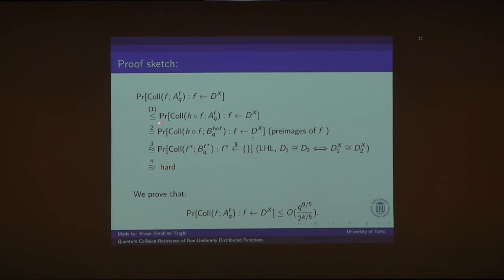So the next step, the second equality, we have a lemma that proves that when we have a quantum adversary A that makes q queries to the function f, then we can construct a quantum adversary B that makes q queries to h composed with f and outputs a collision with the same probability. So here adversary B has to simulate A. So B runs A and answers its queries by looking at the pre-image of f. So B simulates A.